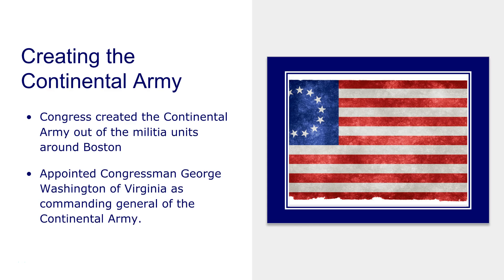At that point it was still basically just the militia fighting. Congress, meeting in Philadelphia, essentially created a Continental Army out of the militia units around Boston and appointed George Washington — who was a congressman in the Continental Congress — as the commanding general. The Continental Army meant soldiers weren't limited to serving in their own state; unlike a typical militia that served in just your state or county, the Continental Army could be deployed anywhere across the colonies, and most of the men agreed to that.